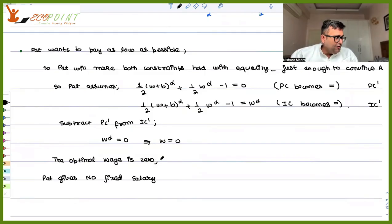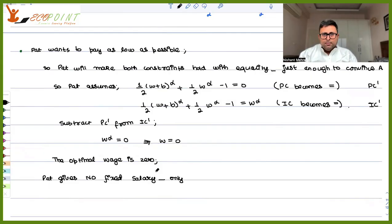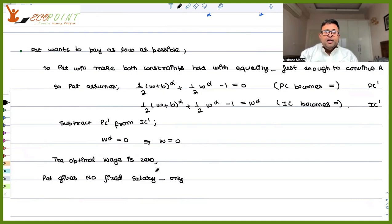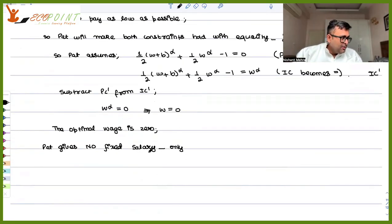Pat gives no fixed salary. Only the bonus is used to create incentive. But you will get the bonus only if you put in high effort and the project is successful. In order to get the bonus, you have to accept the contract, put in high effort, and nature also has to help make the project successful.